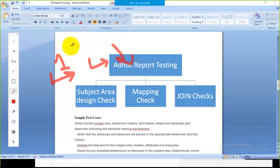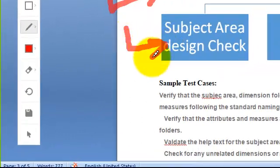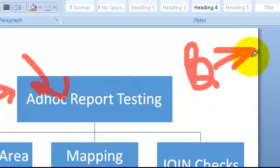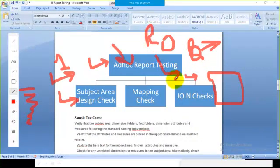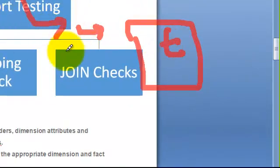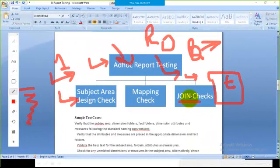Within ad hoc testing, we have a subject area check — if we have multiple areas to design, for example boys in a class from the age group 1998 to 2000, that is the area I'm looking for. We also do a mapping check — comparing the report against an Excel sheet to verify if it's giving the correct results.